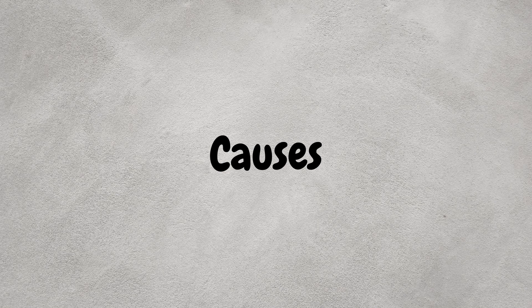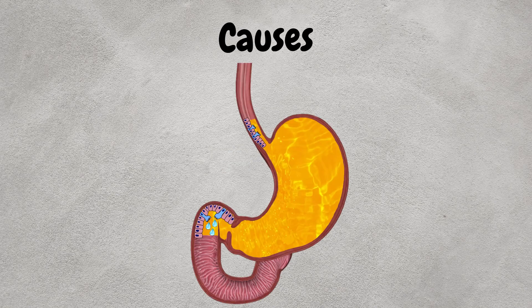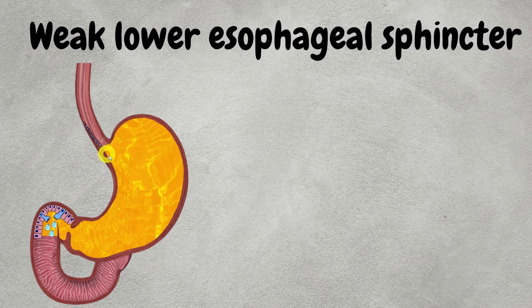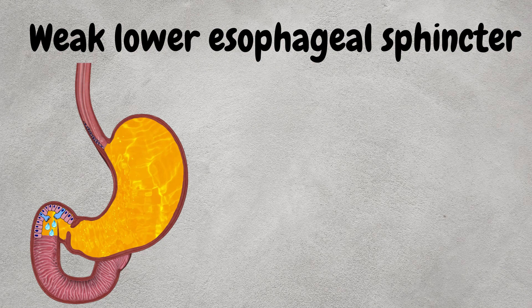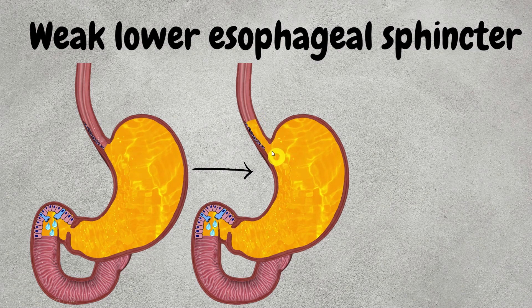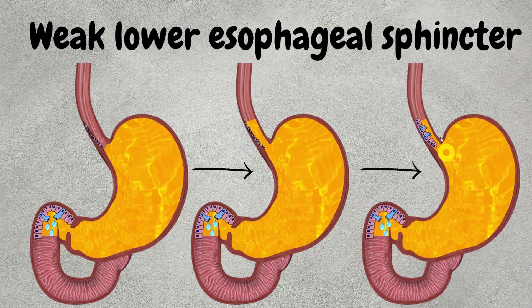Let us explore the causes now. Barrett's esophagus is primarily caused by chronic and untreated GERD. Now let us see what causes more acid reflux that may ultimately lead to Barrett's esophagus. Number one is a weakened lower esophageal sphincter. Normally, the lower esophageal sphincter prevents reflux of acid from the stomach into the esophagus, but when it is weakened, the stomach acid can easily reflux back. In chronic conditions, irritation by the acid can ultimately lead to Barrett's esophagus.